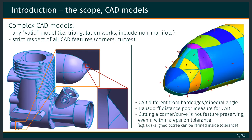What we mean is that for any valid model for which we are able to build triangulations, we should be able to do quad meshes with our approach. And we want to do this while respecting all the CAD features.